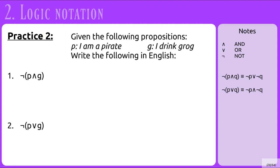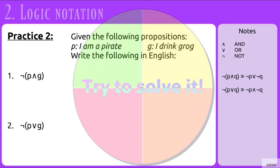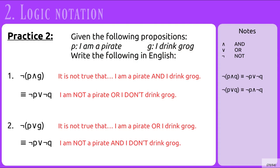Here's another practice problem. Using the same variables where P is 'I am a pirate' and G is 'I drink grog,' write the following in English: 1. NOT(P AND G). 2. NOT(P OR G). For number 1, you should have 'it is not true that I am a pirate and I drink grog,' which simplifies to 'I am not a pirate or I don't drink grog.' For number 2, the negation is 'it is not true that I am a pirate or I drink grog,' which simplifies to 'I am not a pirate and I don't drink grog.'